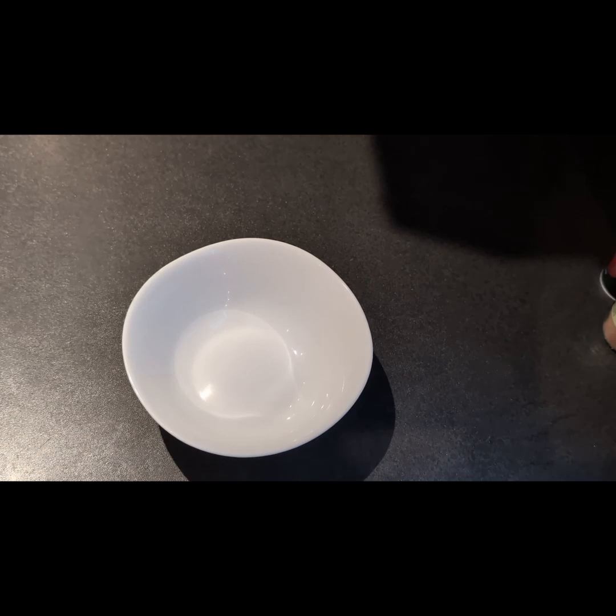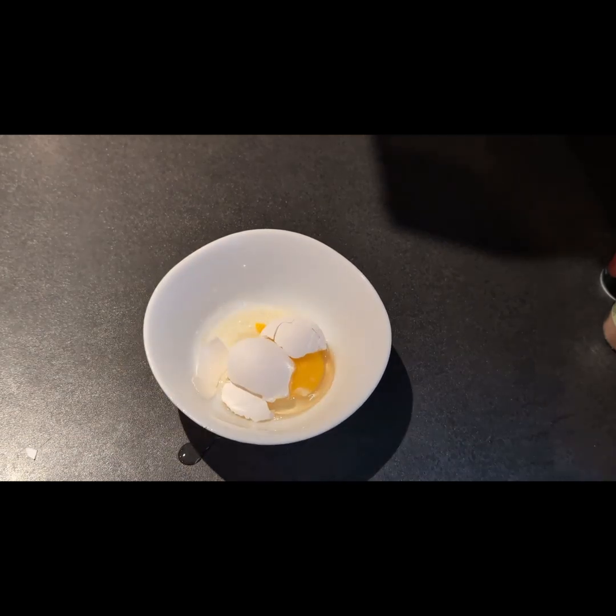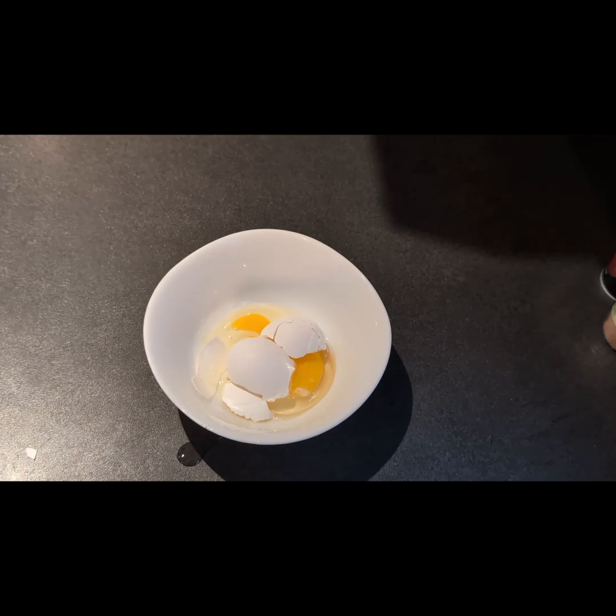If we start with a raw egg and drop it on the floor, the egg will shatter and break apart. The egg goes from a well-ordered low entropy state into a disordered high entropy state.